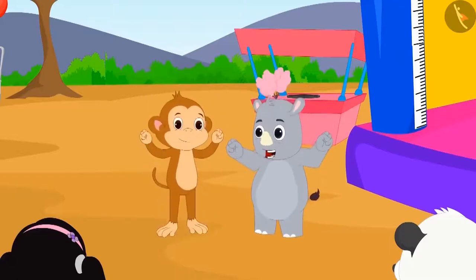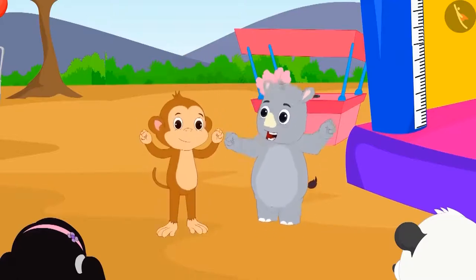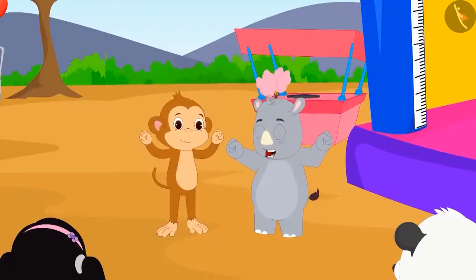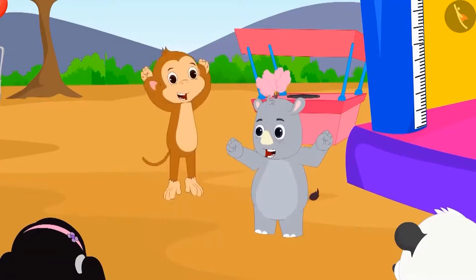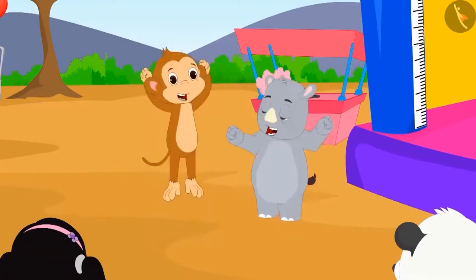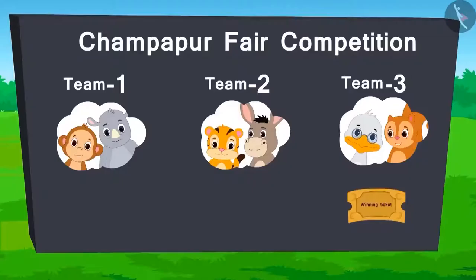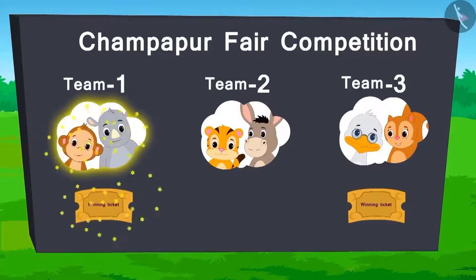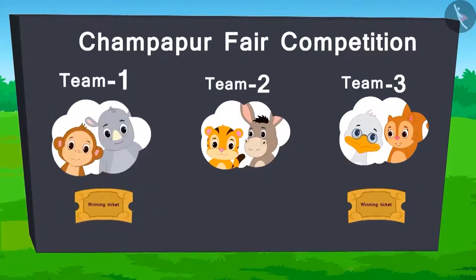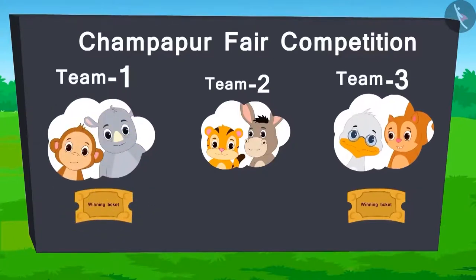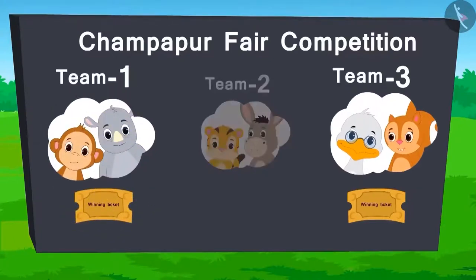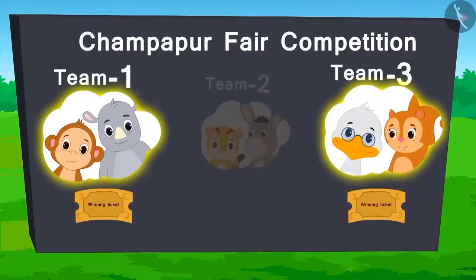Team 1 has won the ticket by reaching the highest number. Here is the score so far — there is a tie between team 1 and team 3.